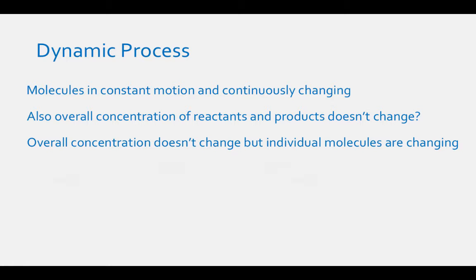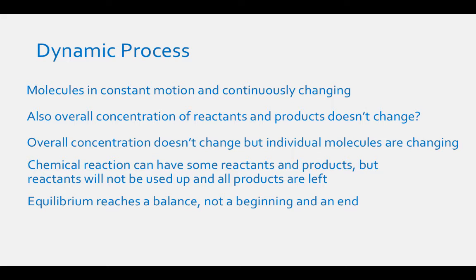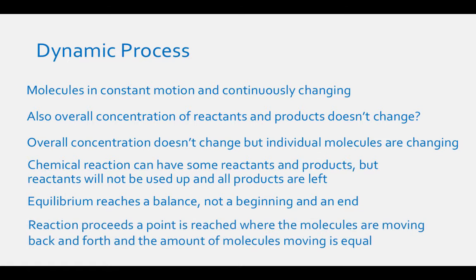Equilibrium means that a chemical reaction can have some reactants and products in its final state — it reaches a balance, and it doesn't reach a point where all the reactants are used up and all you have is products. It doesn't have a beginning and an end. As a reaction proceeds, a point is reached where even though the molecules are moving back and forth, the amount of molecules moving back and forth are equal.